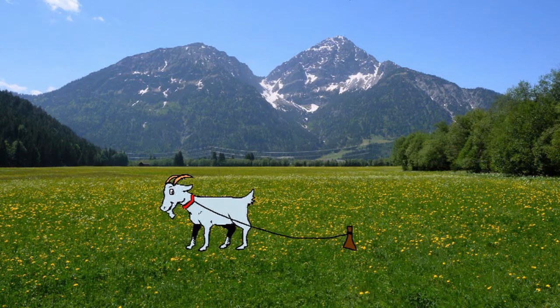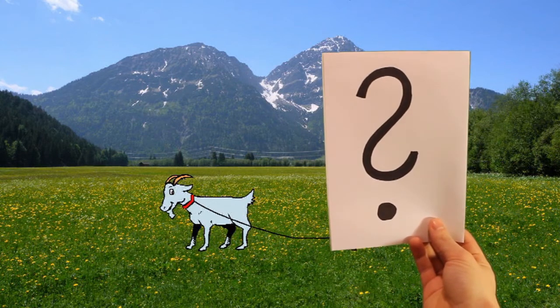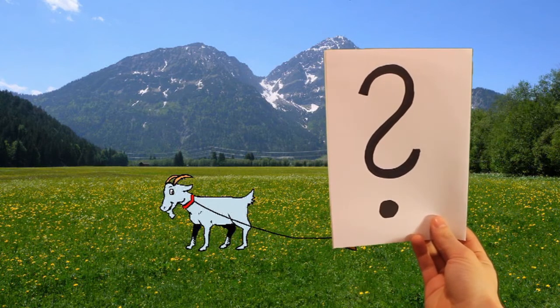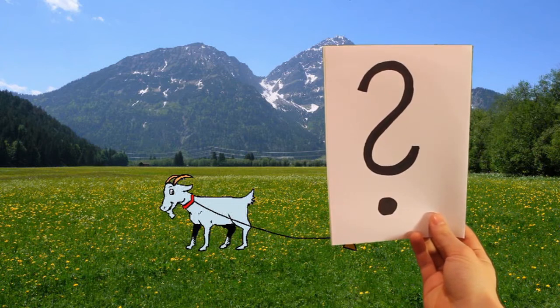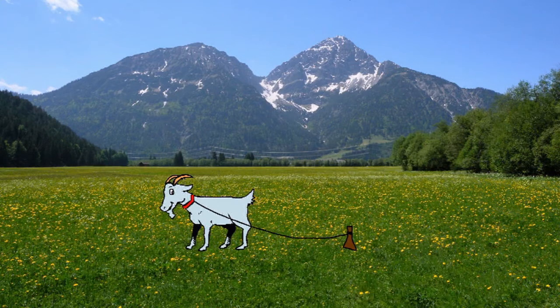So, und jetzt kommen wir zu dem Rätsel, das ihr für den Charlie lösen sollt. Und zwar sollt ihr jetzt herausfinden, wie viel Platz der Charlie wirklich hat. Also wie sieht das Gebiet aus, in dem der Charlie frei herumrennen kann und in dem er sein frisches Gras fressen kann.